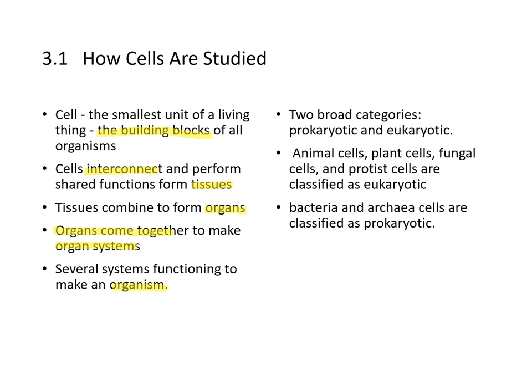There are two broad categories of cells: prokaryotic and eukaryotic. Animal cells, plant cells, fungal cells, and protist cells are classified as eukaryotes, while bacteria and archaea are classified as prokaryotes.